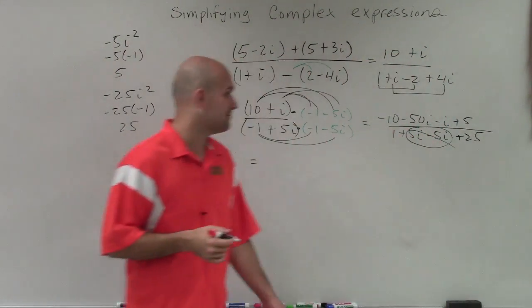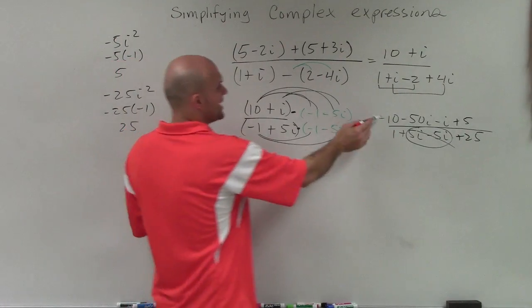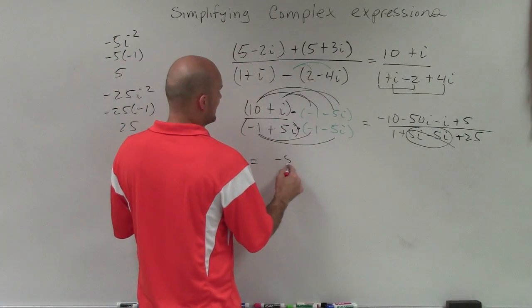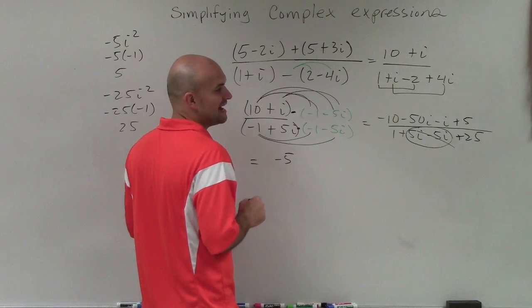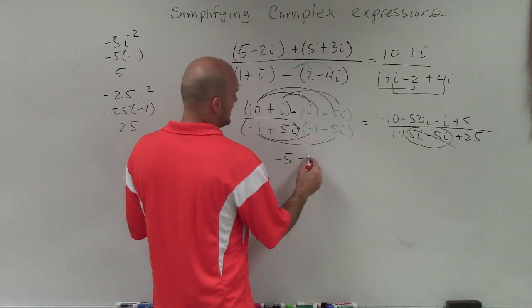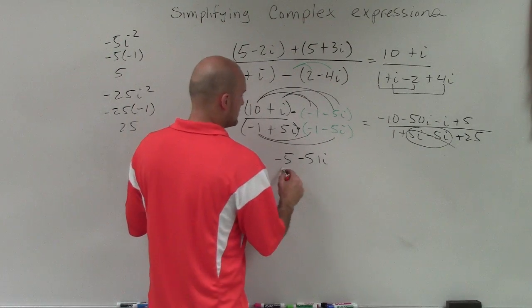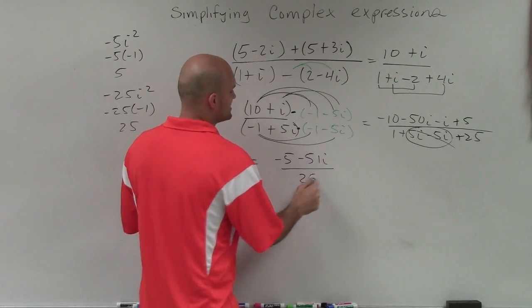Now I can just combine my real and my imaginary components. So -10 plus 5 is going to be -5. -50i minus i is going to be -51i, all over 1 plus 25 is 26.